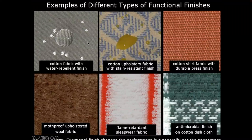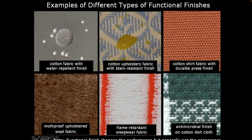These are just some examples. You cannot really tell if a fabric has a functional finish because the appearance doesn't necessarily change, but you can tell when you're using the fabric. For example, this fabric has a water-repellent finish — when you put water on it, the water just stays like beads on the surface and doesn't get absorbed. This one has a stain-resistant finish, this one has a durable-press finish, this has a moth-proof finish for wool, this is flame-retardant sleepwear, and this has an anti-microbial finish.